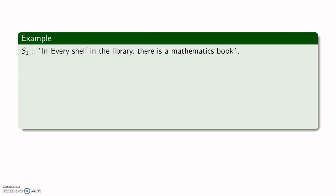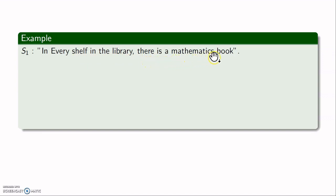I will begin with an example. Suppose I have a statement S1 which says: In every shelf in the library, there is a mathematics book. If you look at this statement closely, you will realize that there are both quantifiers in the statement. When I say 'in every shelf in the library,' I have the universal quantifier. The second half, 'there is a mathematics book,' is the existential quantifier. So in each shelf of the library, you will find a mathematics book.